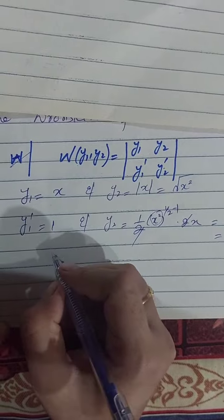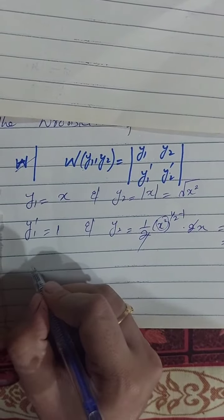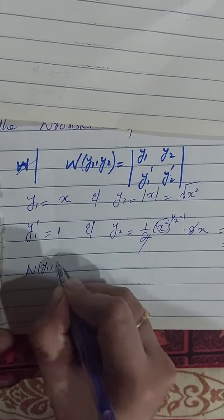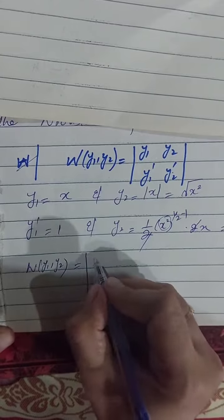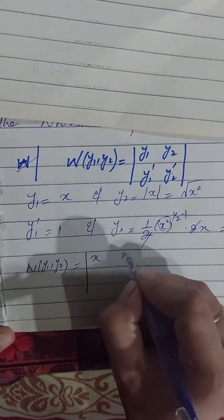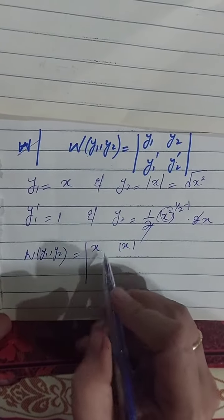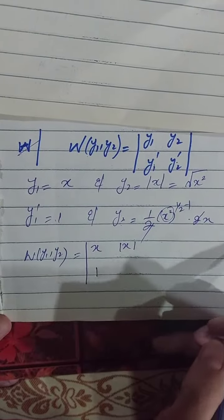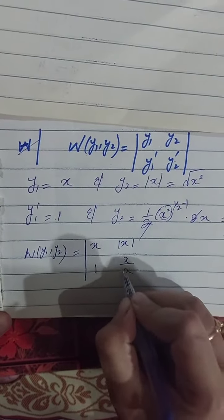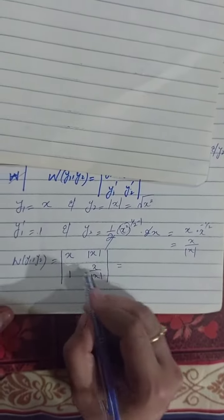Now we have to simply put the values into the determinant. So here, x, x absolute, then y1 dash, and the other one is y2 dash which is x divided by x absolute. Now by taking cross multiplication, because here is the determinant.